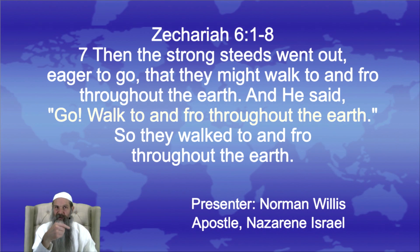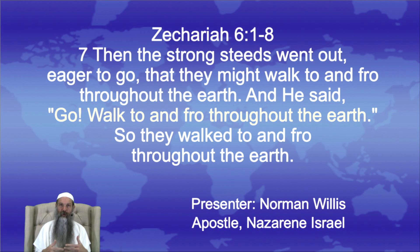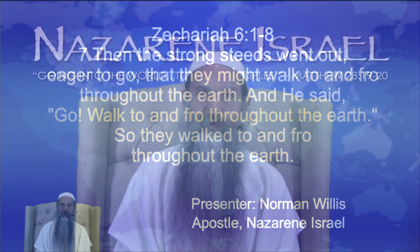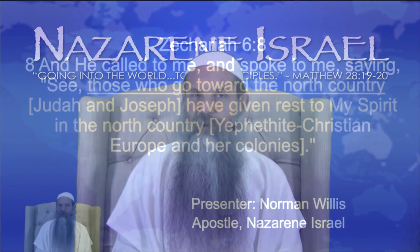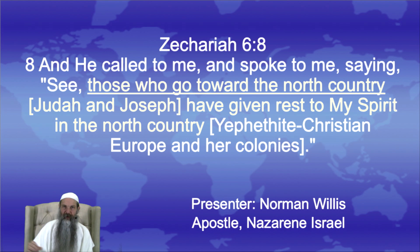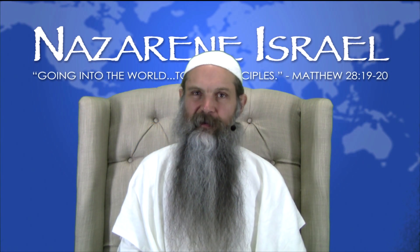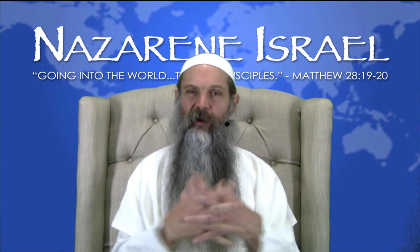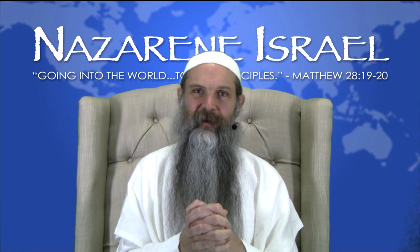In Zechariah 6:7-8, 'Then the strong steeds went out, eager to go, that they might walk to and fro throughout the earth. And he said, Go, walk to and fro throughout the earth.' And in verse 8, 'Those who go toward the north country' — meaning Judah and Joseph — 'have given rest to my spirit in the north country.' What this means is that Yahweh likes it when Jews and Joes — Jewish people and Josephite Christians — are dwelling together in the same area. It produces a harmony.